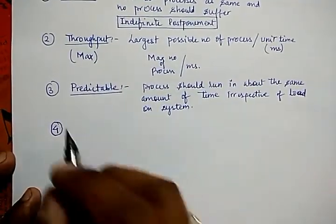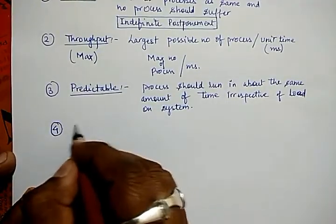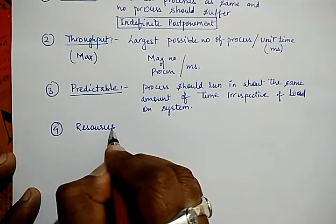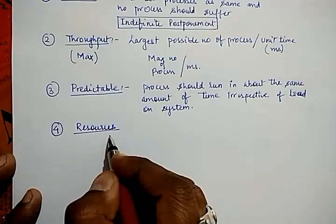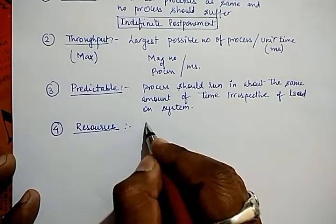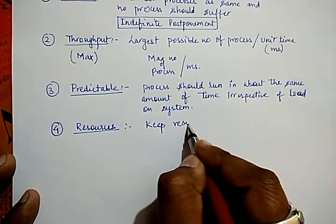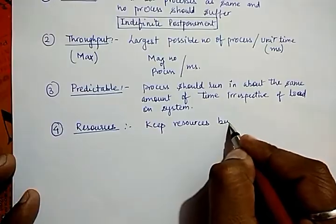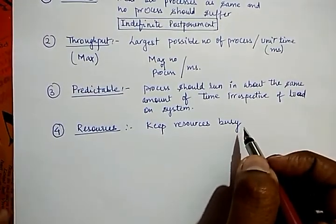Number four is called resources, or we can call it keep resources busy. It says that all the resources of the system must be busy — in short, keep resources busy as much as possible.